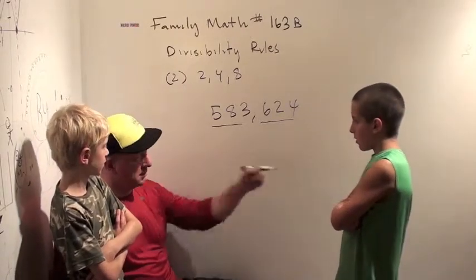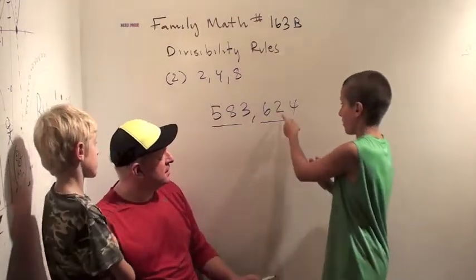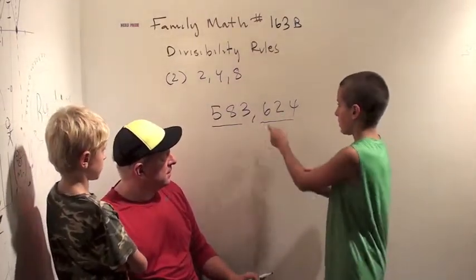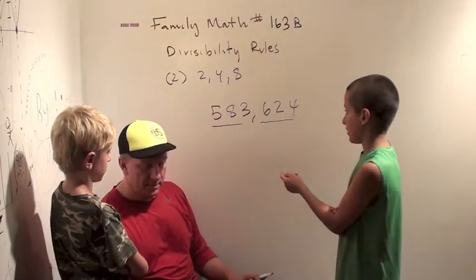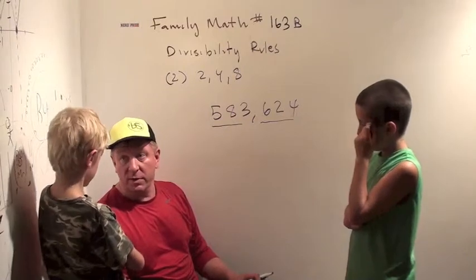Okay, why? Well, sort of the same thing you said about 5. Because 20 is already divisible by 2, 600 is already divisible by 2, and up and up, and all I have to check is 4. Okay, what do you think?